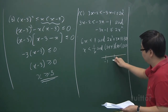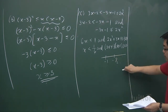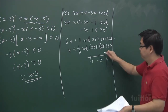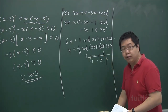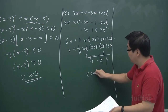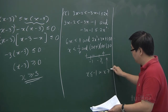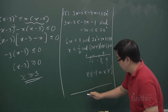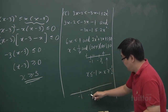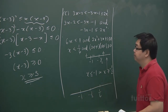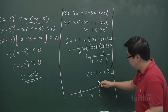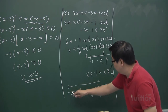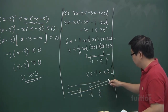Substituting a value greater than −1/2, say x = 0, the expression is positive. So the sign pattern gives: x ≤ −1 or x ≥ −1/2. We then combine both inequalities. We have x < 1/6 from the first, and x ≤ −1 or x ≥ −1/2 from the second.